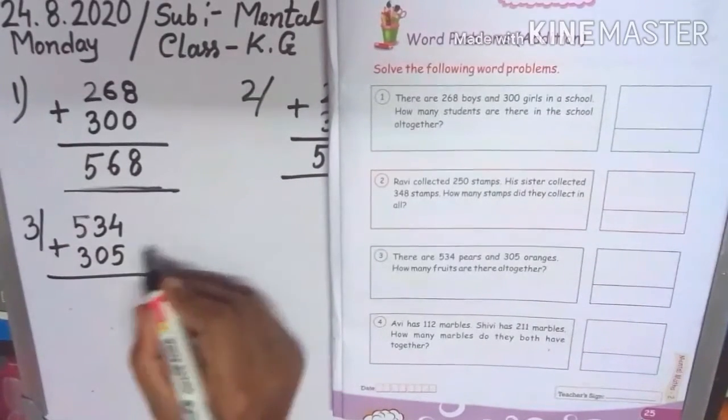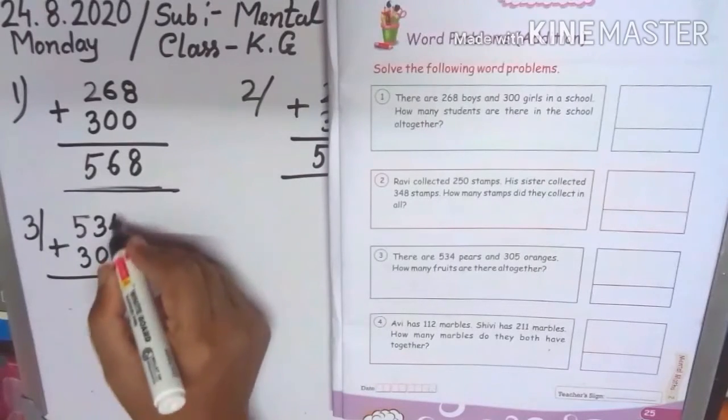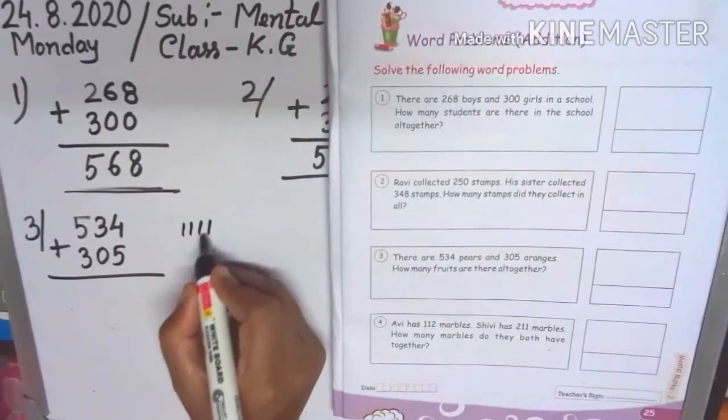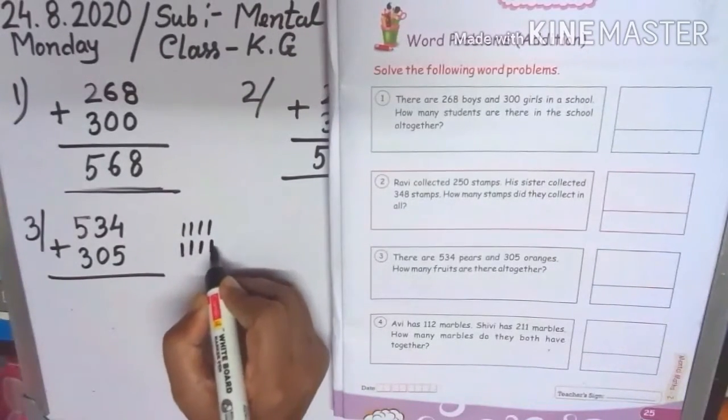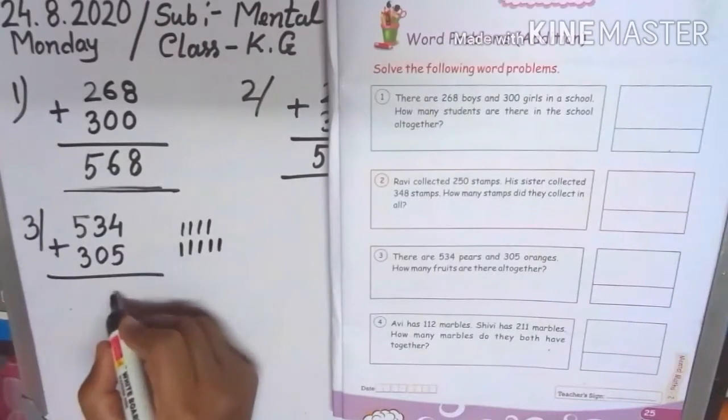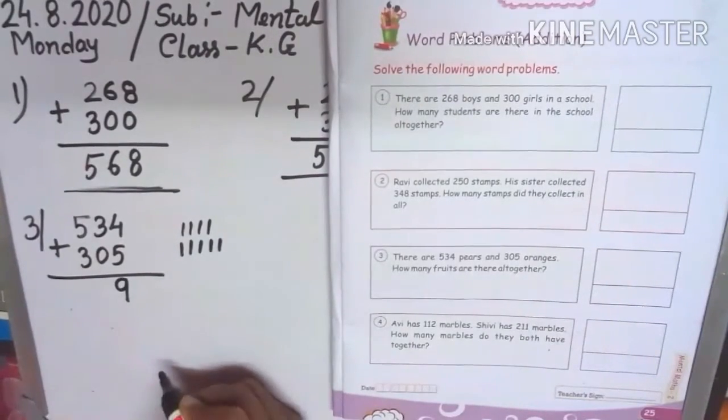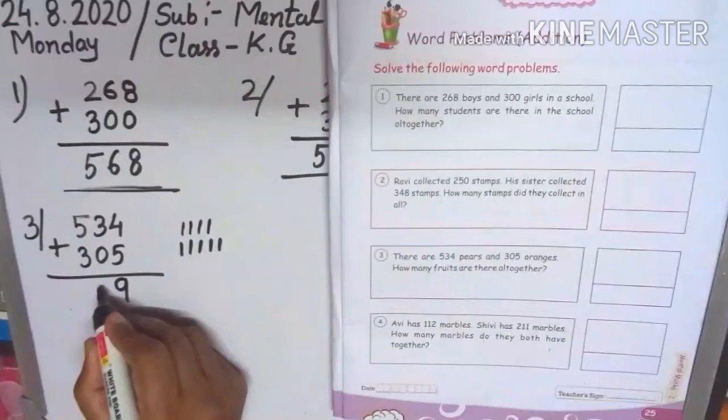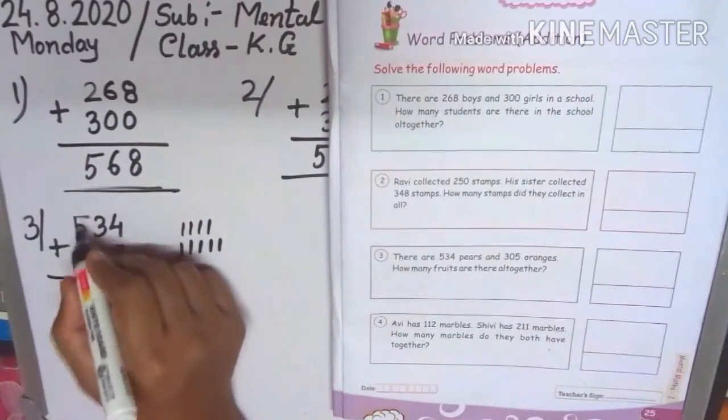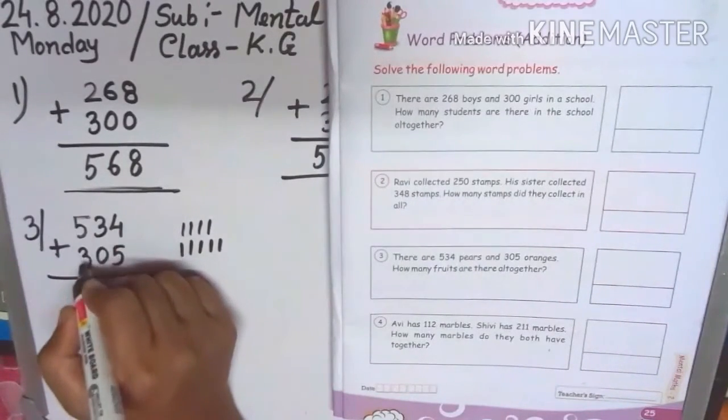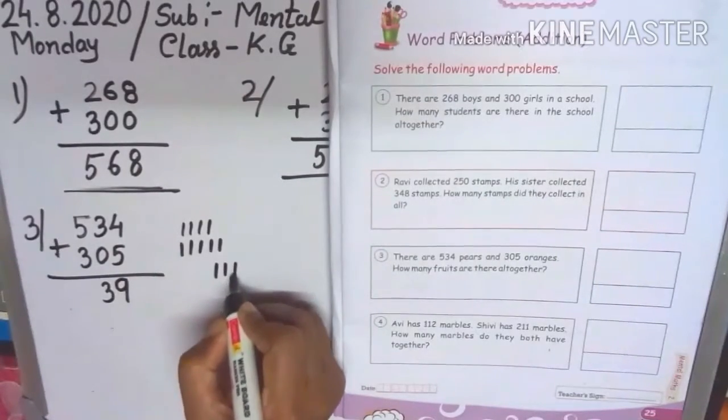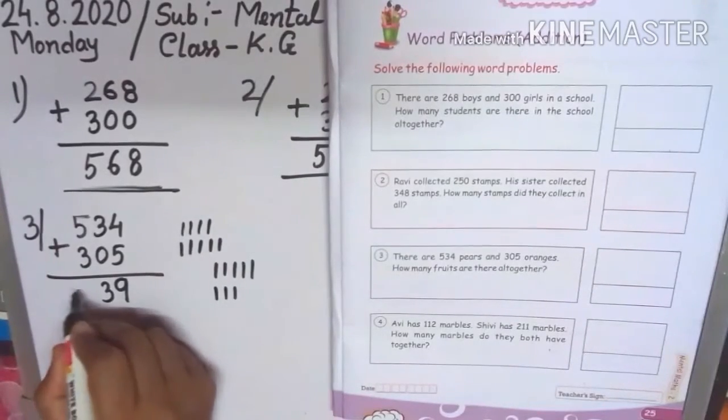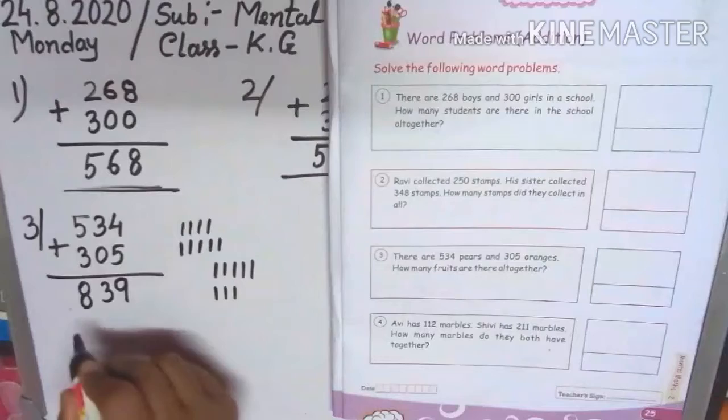So 1's column you first see 4 plus 5, 9. So you draw the line first. Total count. Right here 9. 3 plus 0, 10's column 3. And 100 columns you see 5 and 3. 5, 1, 2, 3, 4, 5, 8. So count all together 8.